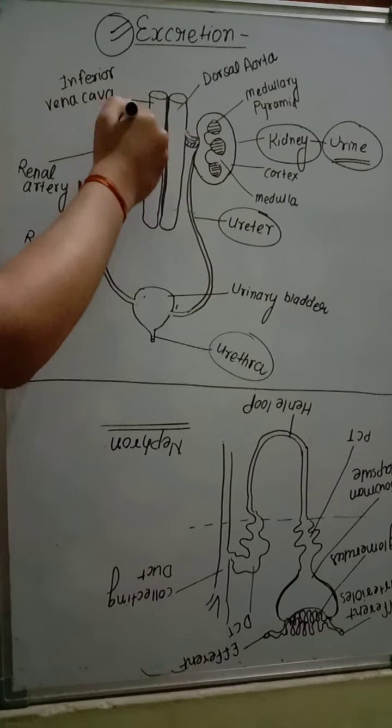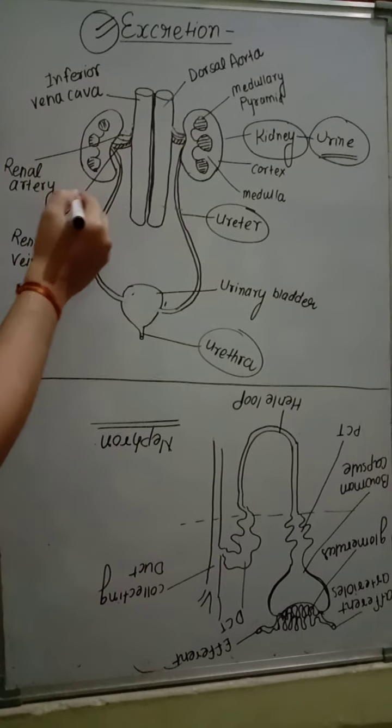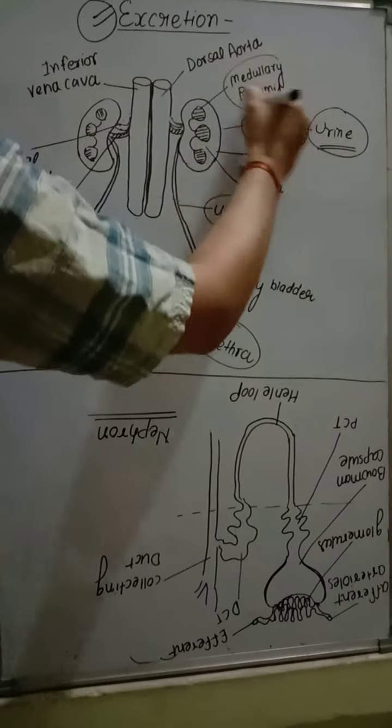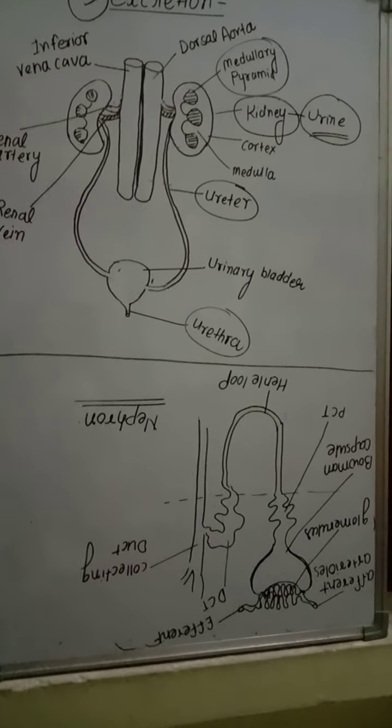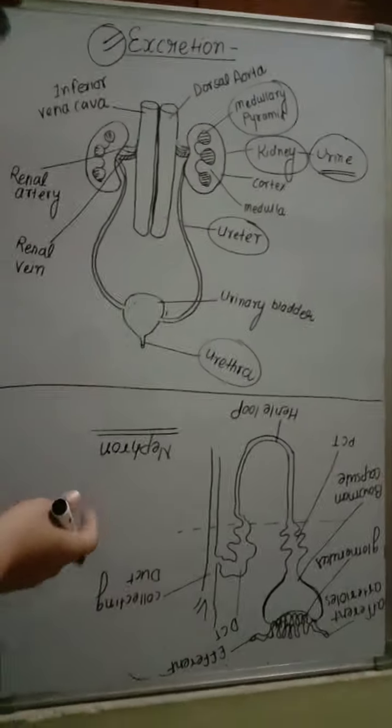This kidney contains renal pyramids, medullary pyramids. These pyramids contain millions of nephrons. Nephron is a structural and functional unit of kidney. So we move to the nephron.